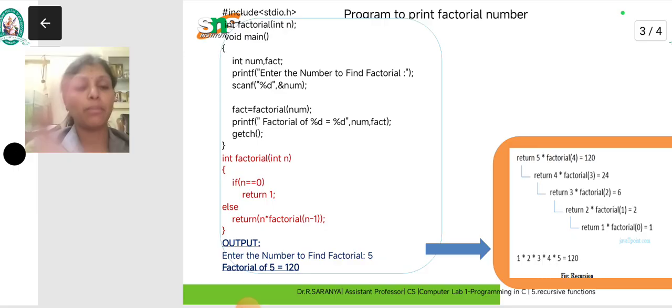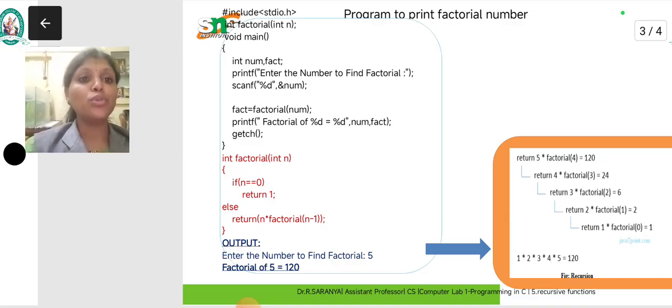In the declaration part, we declare variables num and fact. First we get the value from the user and store it in num. Then fact is equal to factorial of num.